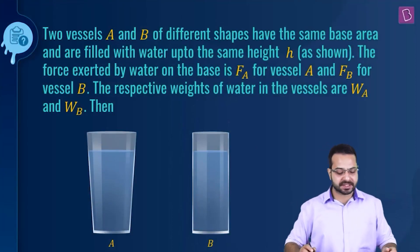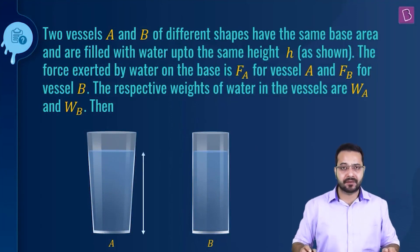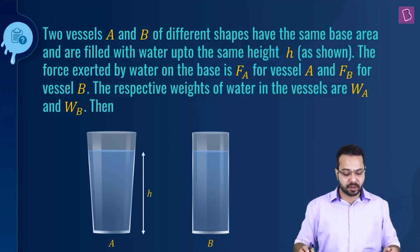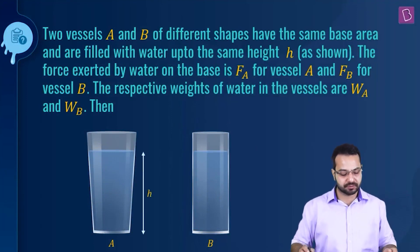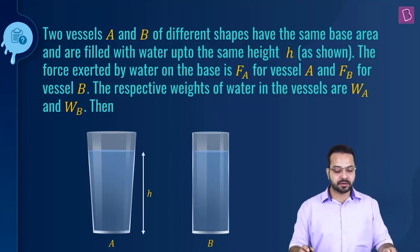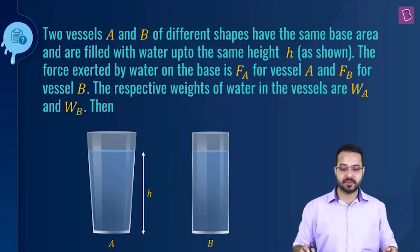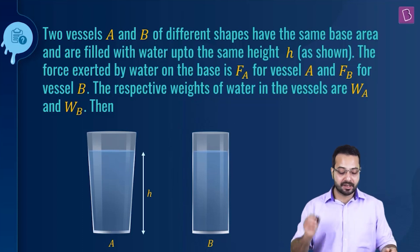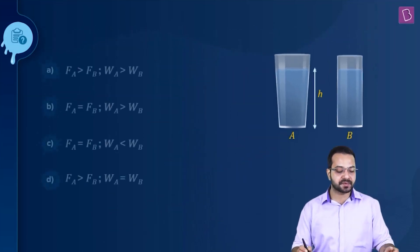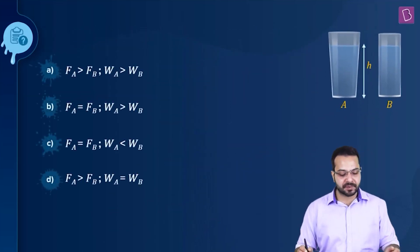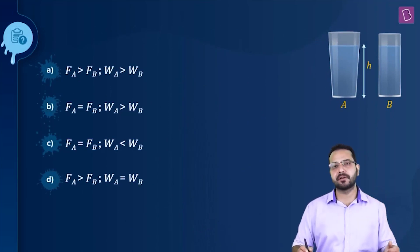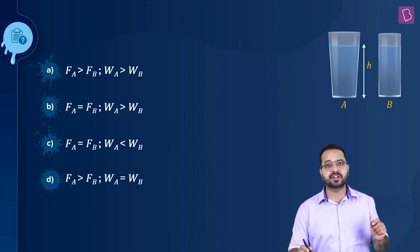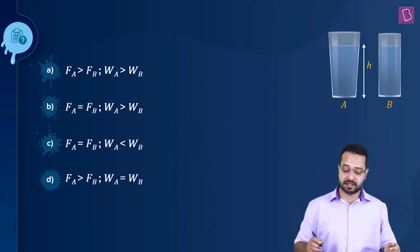The question is: two vessels A and B of different shapes have the same base area and are filled with water up to the same height H. The force exerted by water on the base is FA for vessel A and FB for vessel B. The respective weights of water in the vessels are WA and WB. We have to figure out the relationship between FA and FB and the relationship between WA and WB.